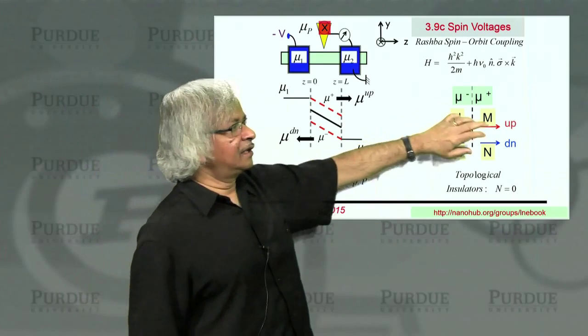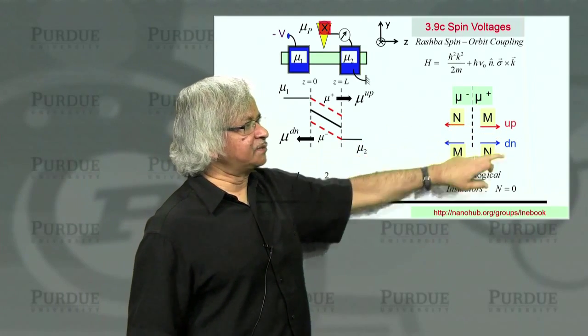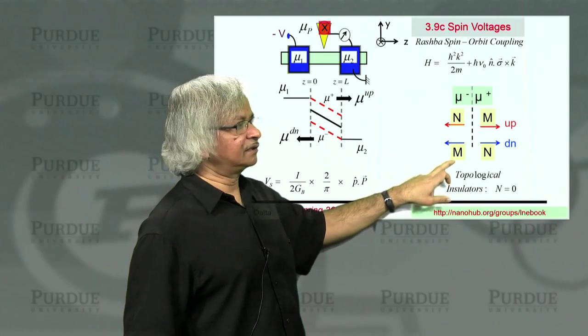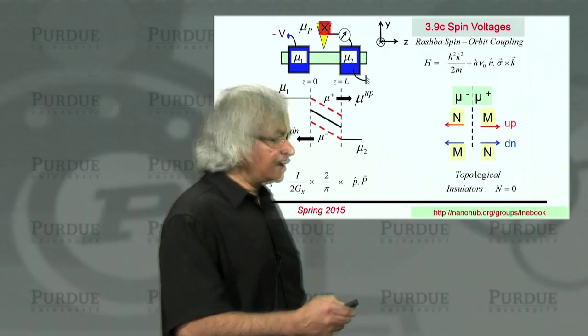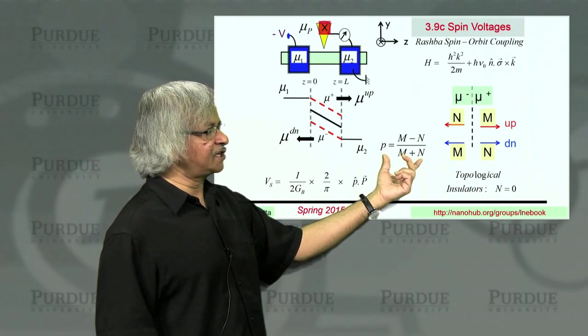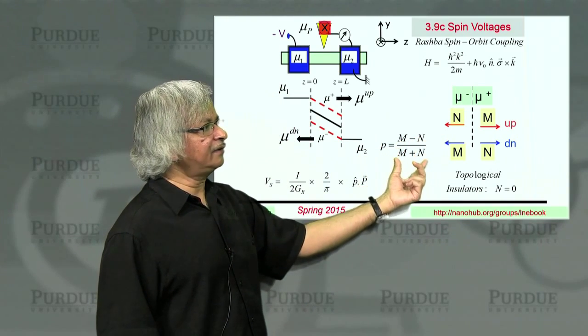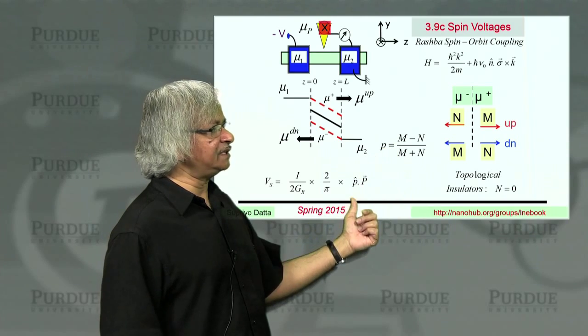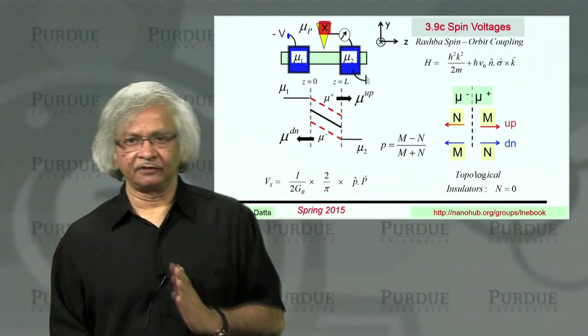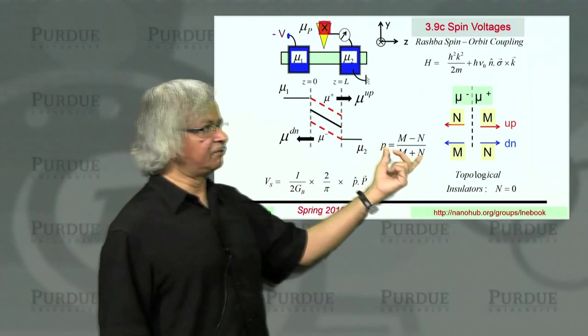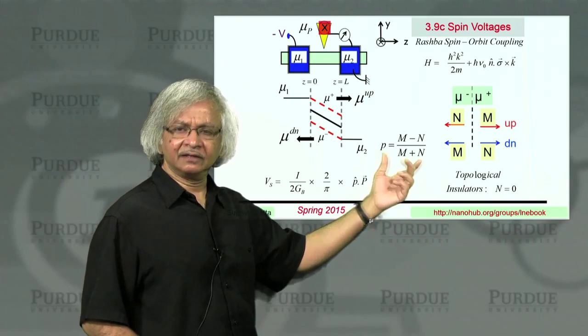Of course, normal materials are where M is equal to N. That's what we are generally used to. But M can be very different from N. And of course, an extreme example is this topological insulators, where N is actually equal to 0. So, right moving means upspin, left moving means downspin, because N is 0. But more generally, N is not 0. And you could define this polarization as M minus N over M plus N. That's the P that enters here. So you'd still have a spin potential as long as M is different from N, but it would be somewhat smaller because of this factor.